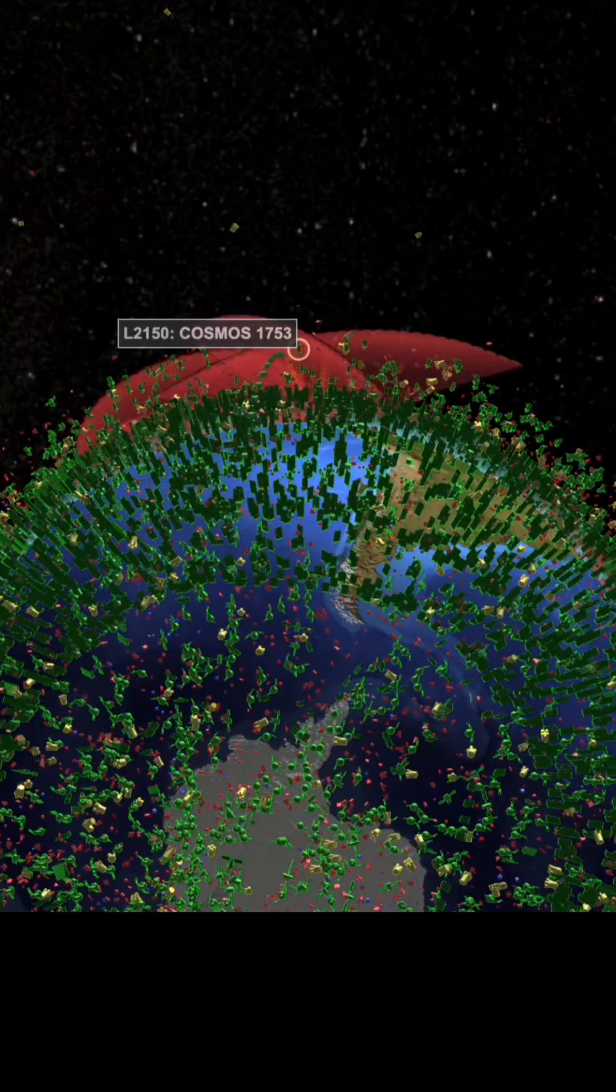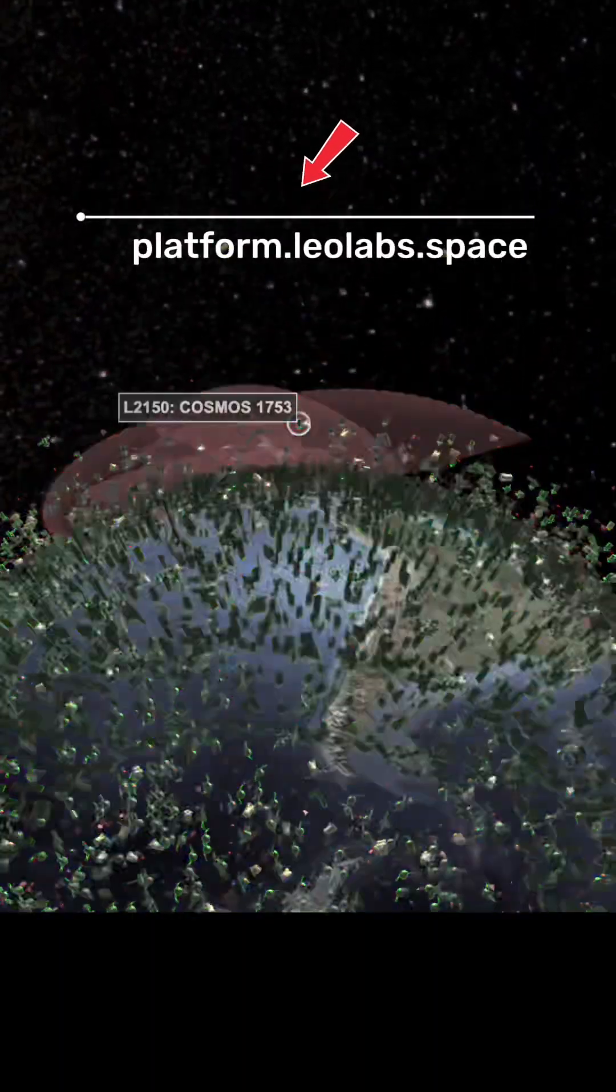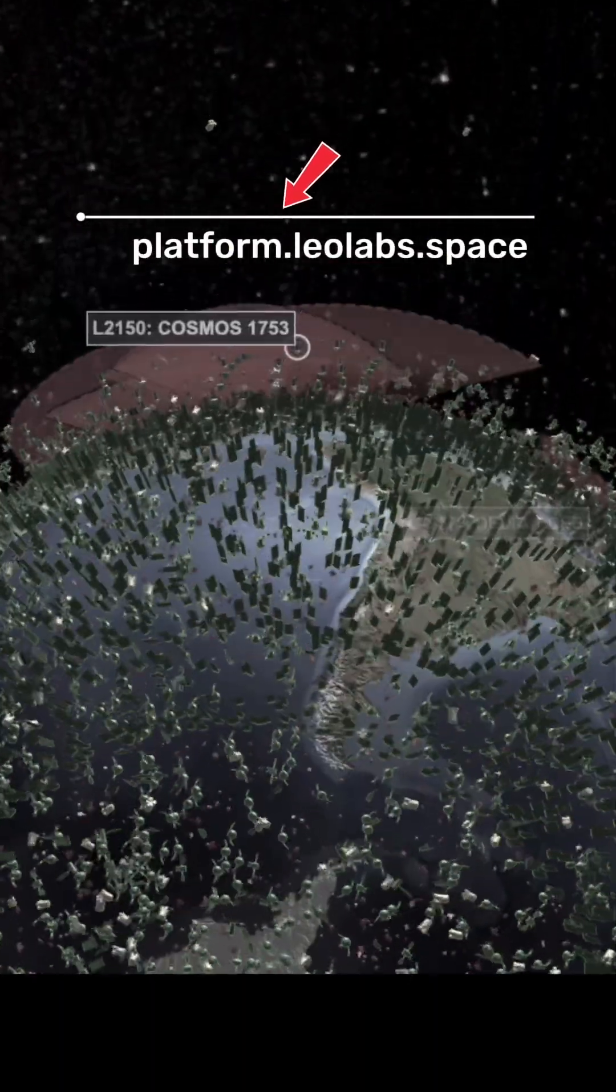And the best part? You can see this map right now! Go to platform.leolabs.space to see the organized chaos for yourself.